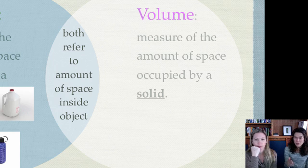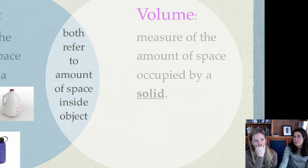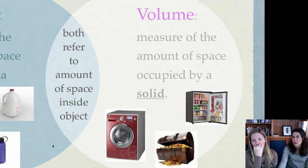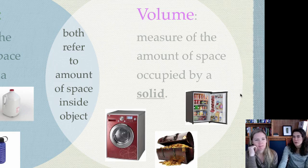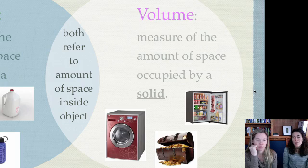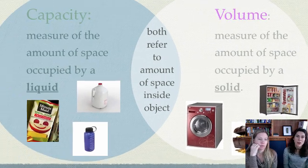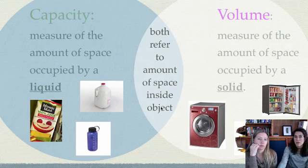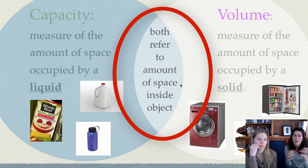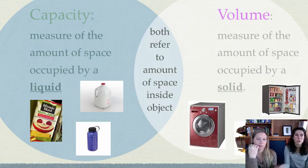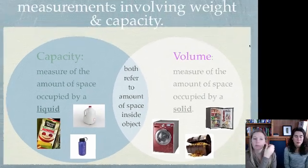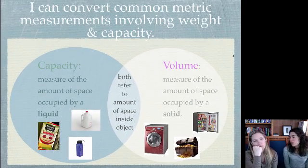Now, for volume, the biggest difference is we're dealing with solids. We have like our washing machine, a treasure chest, and refrigerator. All of those, we are figuring out how much space it takes to fill up those items. And then of course, there's something that they have in similar though. It's still talking about the amount of space that's inside that object. So just take a moment to recreate your little Venn diagram there. Come up with some examples so that stands out to you.